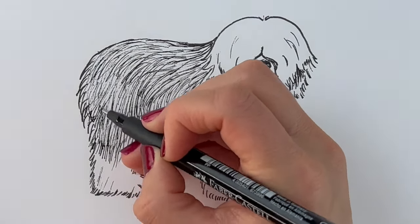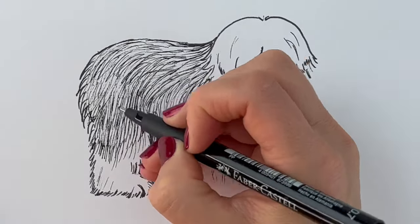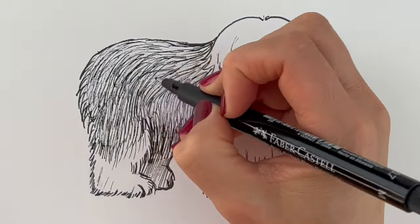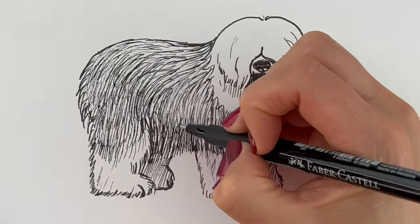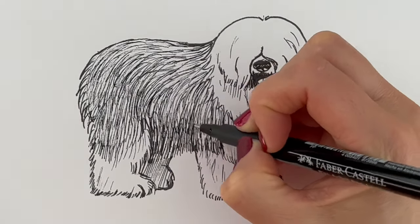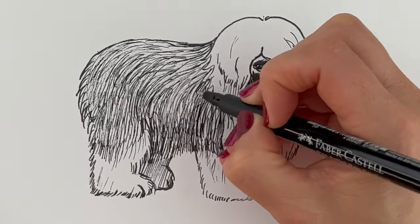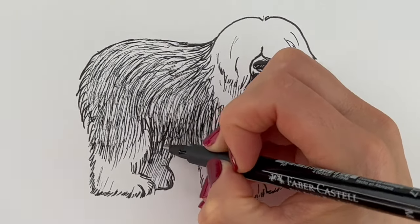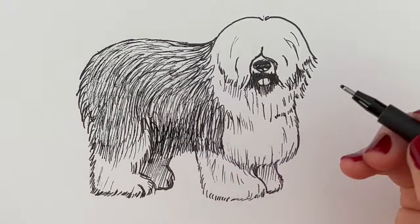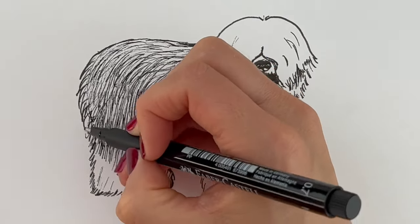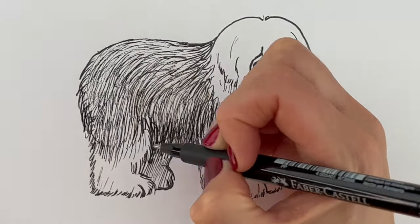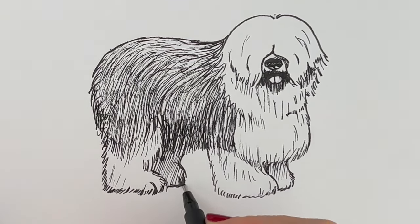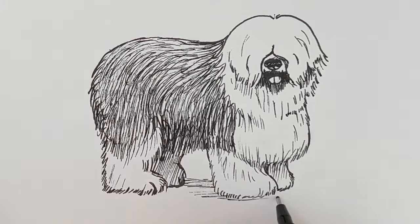I always work in layers so that you can start off lighter and then just keep on adding. Whereas you can't do it the other way around. If you start off heavy then you just can't go backwards. Well, it's a lot harder to go backwards. Okay, now I'm going to add some ground so it doesn't look like this Old English Sheepdog's floating around.